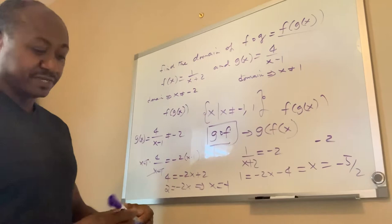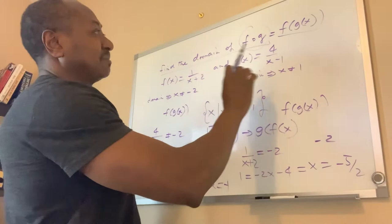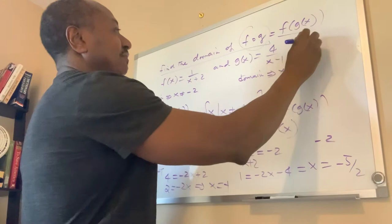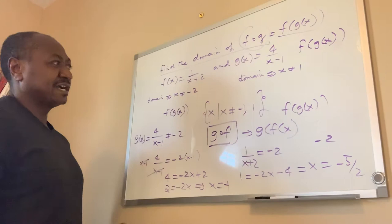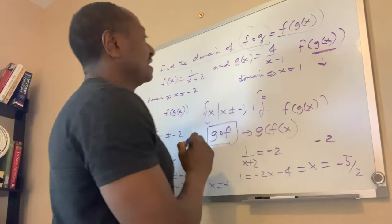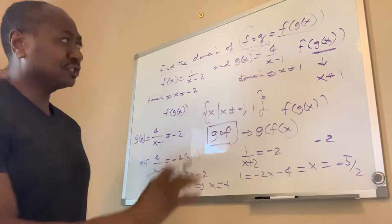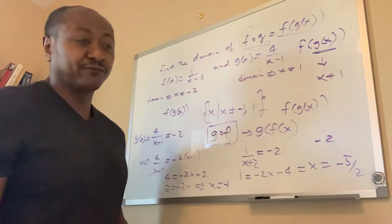In this example, I'm going to reiterate from yesterday: we're finding the composite function f of g. Remember, f of g is translated as f of g of x. When you find the domain of this composite function, first you want to find the domain of the inner function g of x. For g of x, the domain is x is not equal to 1. That is one of the domains you have to exclude from the composite function.